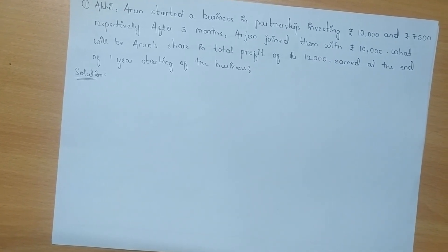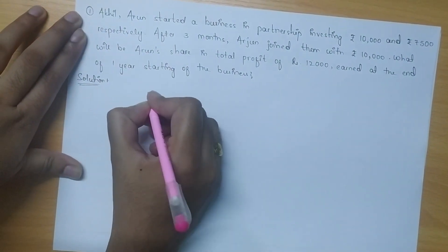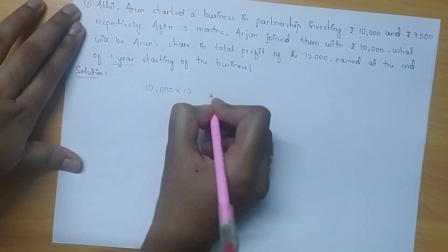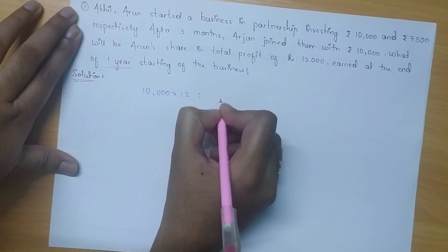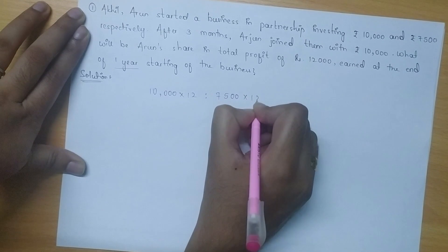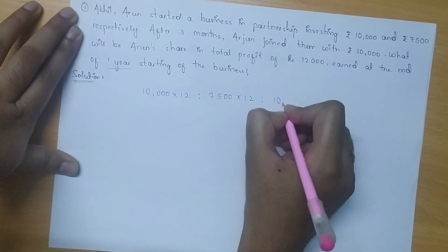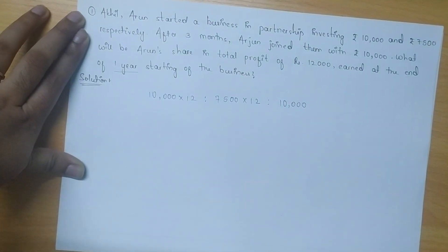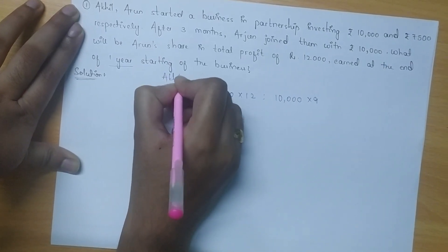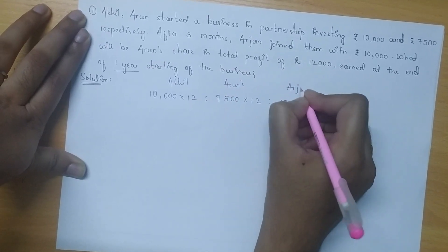Here we have to find out the ratio of Akhil, Arun and Arjun. Akhil has invested 10,000 rupees for a complete 1 year, which is 12 months. Arun invested 7,500 rupees also for 12 months, a complete year. Arjun invested 10,000 after 3 months of the start, so his investment is only for 9 months. So this is Akhil's share, Arun's share, and Arjun's share.